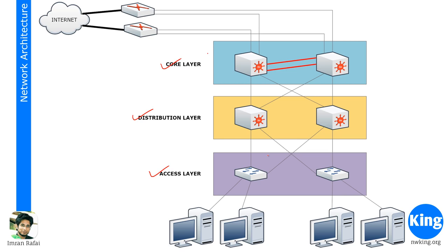In the access layer, switches are Layer 2 switches — they cannot do Layer 3. The distribution layer also will not do Layer 3 but they're high-powered devices. If access layer switches want to connect to another access layer switch, that traffic will always go through the distribution layer and then come back to the access layer to communicate.